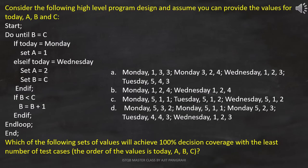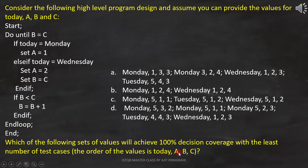Here, the question is: consider the following high-level program design and assume you can provide the values for today, A, B, and C. Which of the following sets of values will achieve 100% decision coverage with the least number of test cases? The order of the values is today, A, B, C. And then these options are provided.